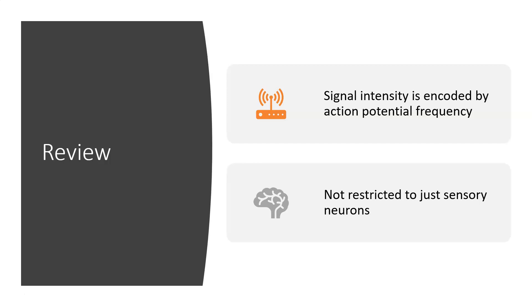This is not just restricted to sensory neurons, but every single neuron in your body also communicates through action potential frequency. When we talk about muscle contraction in the future, we will also see that increasing the strength of a contraction in a muscle fiber can be done by increasing the firing of action potentials in motor neurons.